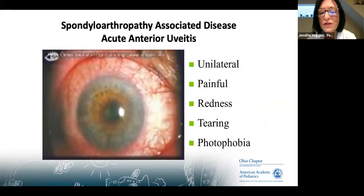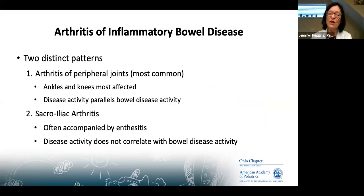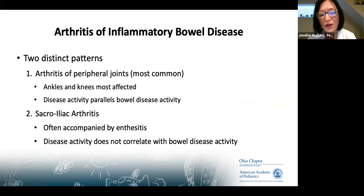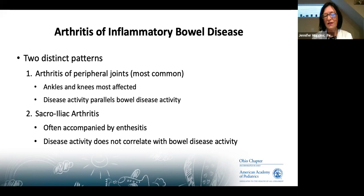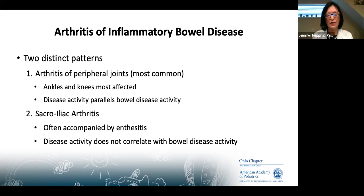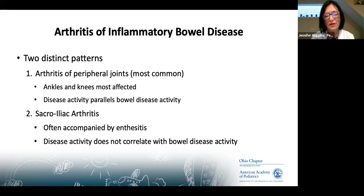One of the extra-intestinal manifestations of inflammatory bowel disease is arthritis, and it can present two ways. The most common is peripheral joint arthritis — if active, the IBD is probably still active, so treating the IBD treats the joint disease. The second is axial involvement with sacral iliitis, where there can be very active spinal inflammation even without active inflammatory bowel disease.